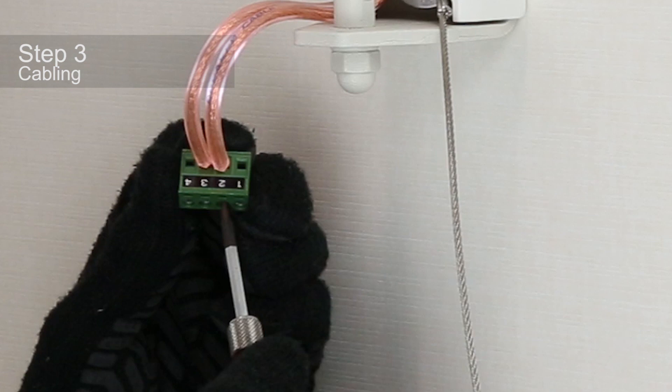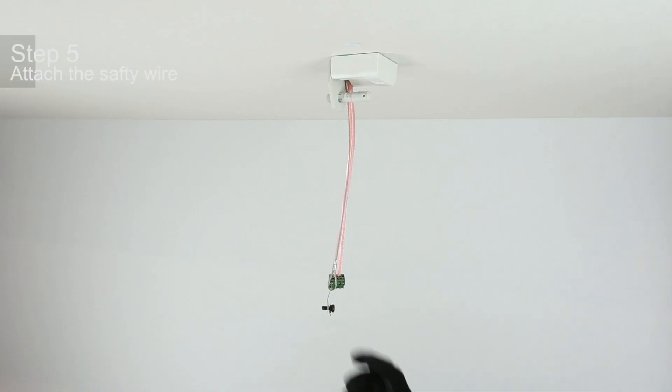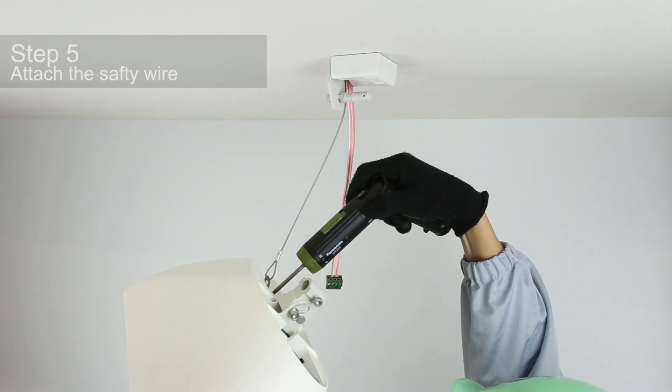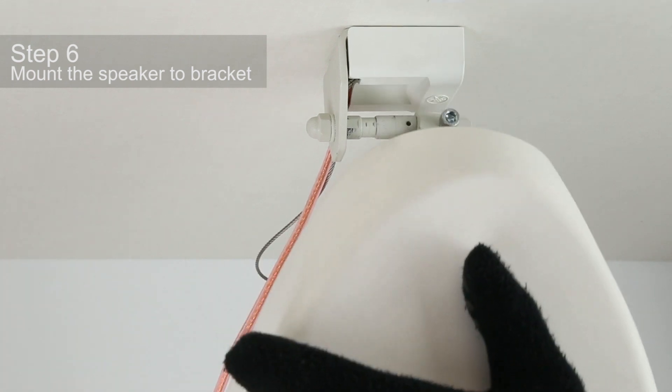Install the speaker cable to the Euroblock. Set the tap. Attach the safety wire to the speaker. Attach the mounting bracket to the VXS speaker unit.